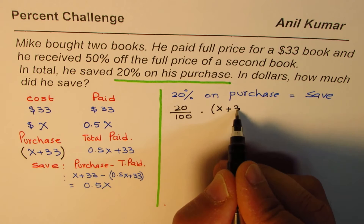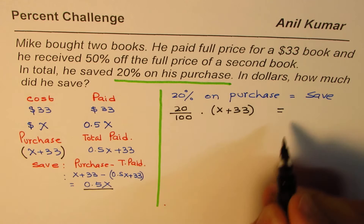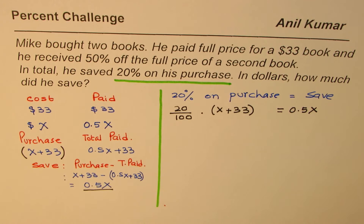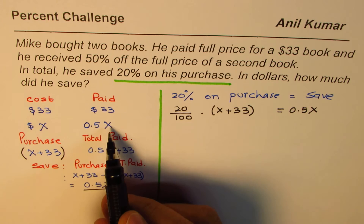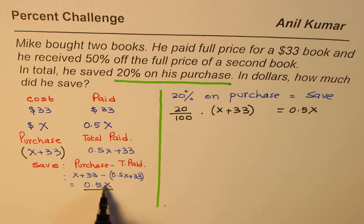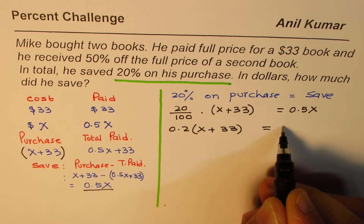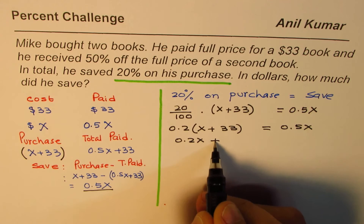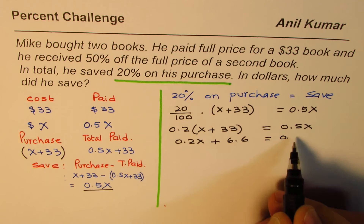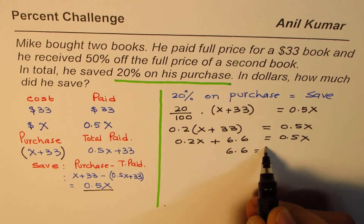So the equation is: 0.2 multiplied by (x + 33) equals 0.5x. To get the total savings in dollars you'll multiply that result by this amount. Let's convert to decimals — it's a good idea. Opening the bracket: 0.2x + 6.6 = 0.5x.